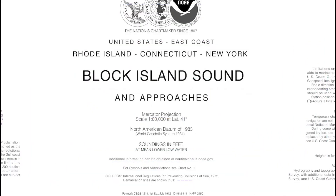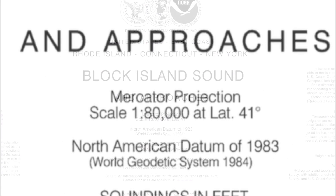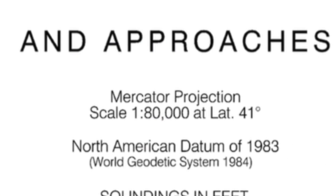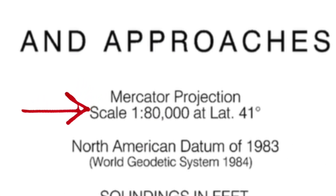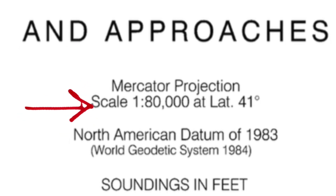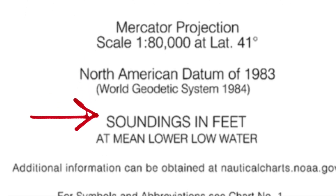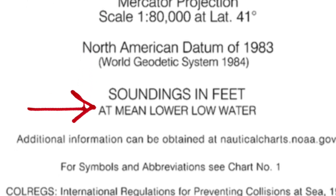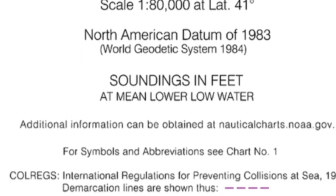When starting out with a new chart, the first thing to do is study the title block. The information you'll find on the title block includes the type of projection and the scale of the chart — in this case, 1 to 80,000. The title block also shows that soundings on this chart are in feet at mean lower low water.